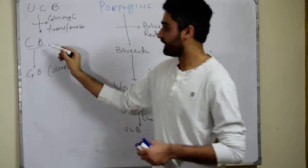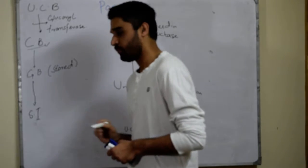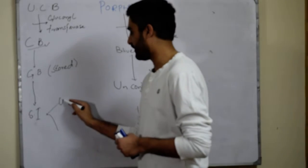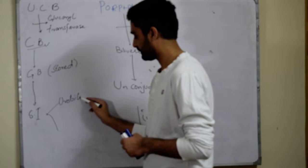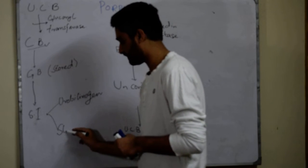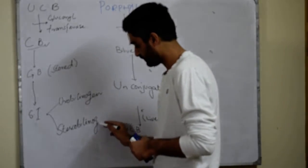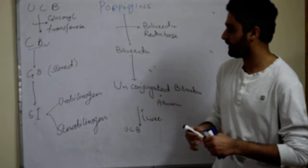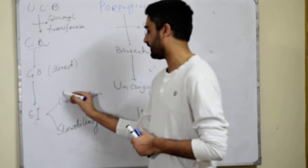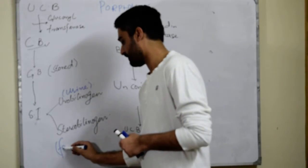From the gallbladder, this conjugated bilirubin comes out and goes to the small intestine, where it has two fates. It is converted either into urobilinogen or stercobilinogen. Urobilinogen is the bilirubin which is excreted in the urine, and stercobilinogen is the bilirubin which is excreted in the feces.